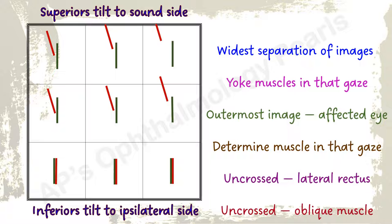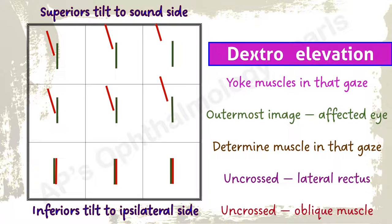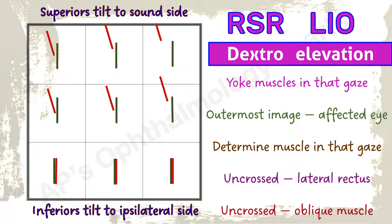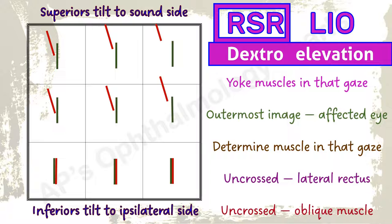Maximum separation here is in dextro elevation. The yoke muscles involved are the right superior rectus and the left inferior oblique. Red is the outermost image, so the right eye is involved — this is a right superior rectus palsy. This is a crossed diplopia, so the rectus checks out. The tilt is towards the sound side, so superior checks out.